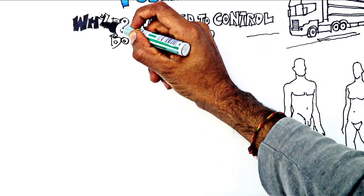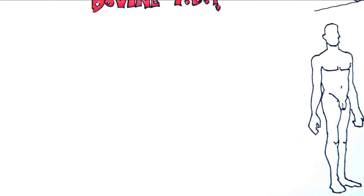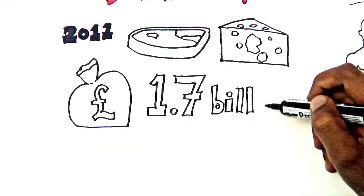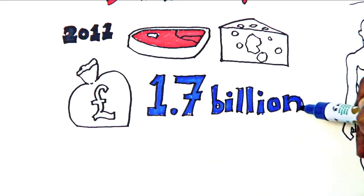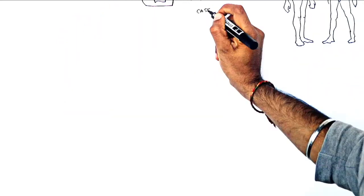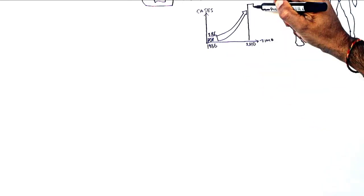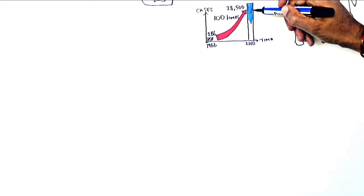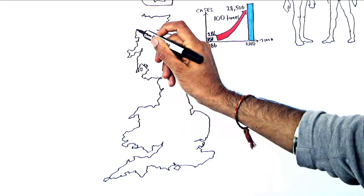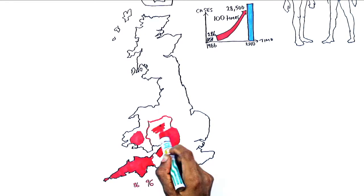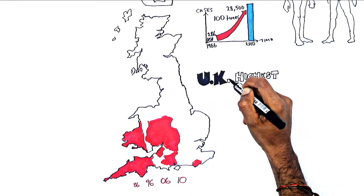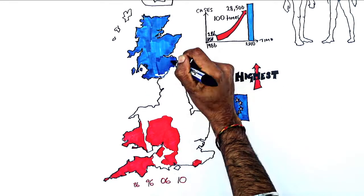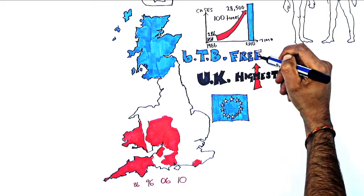Why do we need to control bovine TB? In 2011, the UK's beef and dairy export markets were valued at £1.7 billion. However, over the last three decades, the level of bovine TB has increased significantly, from around 200 cases to 30,000, and spread to new areas of England. The UK now has the highest level of bovine TB in the EU, while Scotland and many other EU countries are officially bovine TB free.